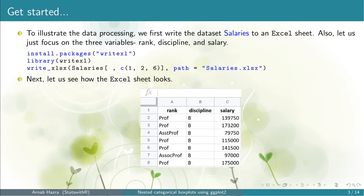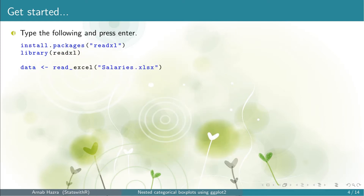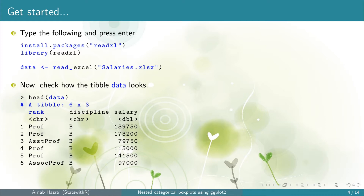Next, let us see how the Excel sheet looks. If you have your dataset in an Excel sheet, start here. To read the data from the Excel sheet, we need the package readExcel. So we install the package using the function install.packages and call the package using the function library. Next, we read the data using the function read_excel. Once we run the code, a table with name data will be generated. Let us check how the table looks. The three columns represent the columns of the Excel sheet. A table is an advanced version of a data frame. We can now proceed to draw the box plots.